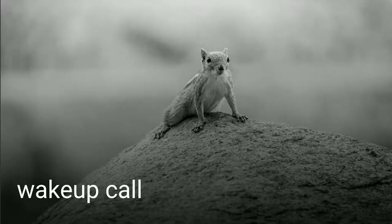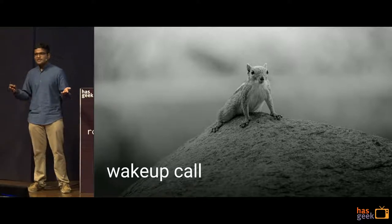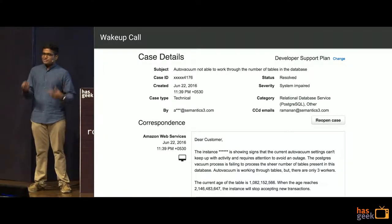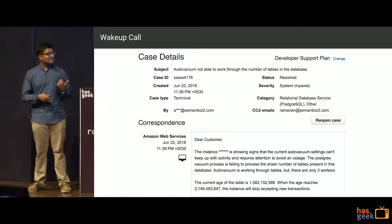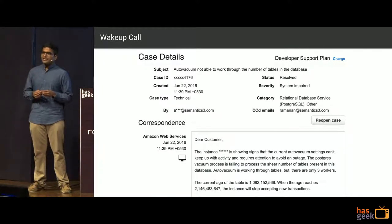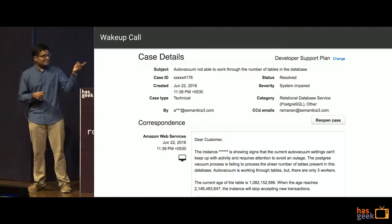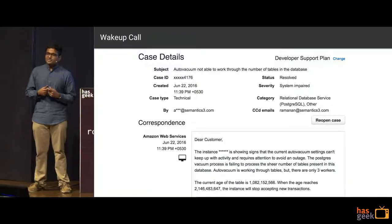Now that we have that primer, this talk is also an incident report of sorts. One day I was working — this was earlier last year — I wasn't doing too much database administrative stuff, but then I got this email from our AWS support team. They said the instance is showing signs that auto-vacuum is not working, and the current age is 1 billion. If you don't fix this before 2 billion, the instance will stop accepting new transactions.